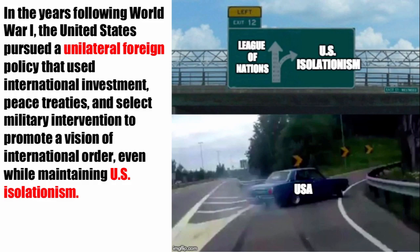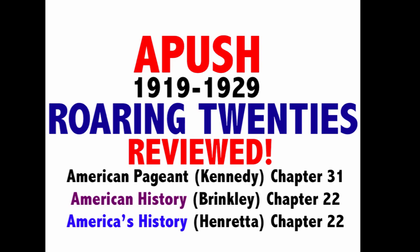In the years following World War I, the U.S. pursued a unilateral foreign policy that used international investment, peace treaties, and select military intervention to promote international order while maintaining U.S. isolationism. After WWI, the U.S. did not join the League of Nations. Engagement with the world happened only on American terms — through the Dawes Plan, the Washington Naval Arms Conference, and the Kellogg-Briand Pact — but largely the 1920s saw a U.S. isolationist foreign policy.